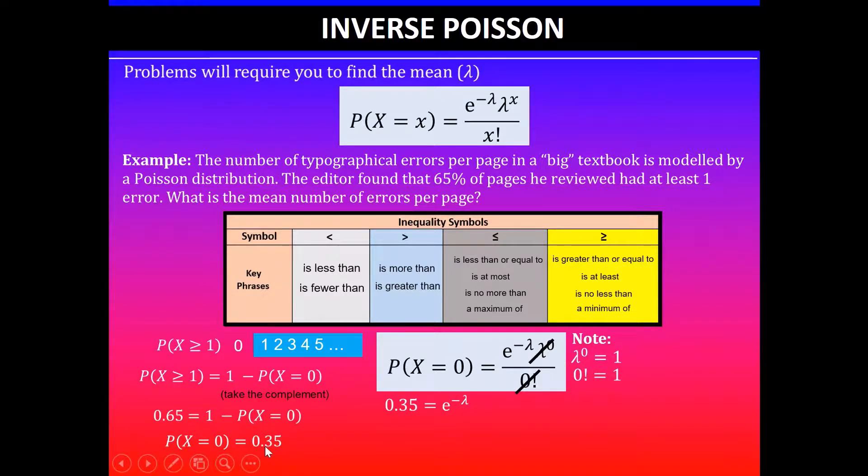This is the probability when it's exactly equal to zero, which we calculated here. So 0.35 is equal to e to the power of minus lambda, and then we'll take ln on both sides, natural log on both sides.